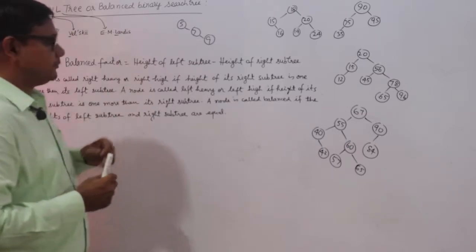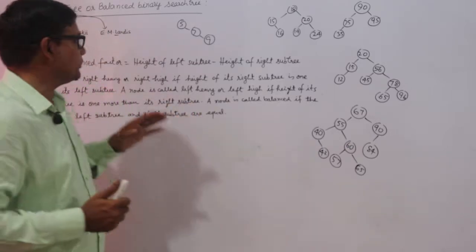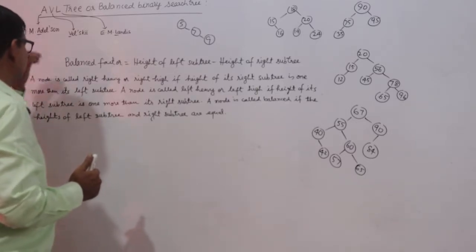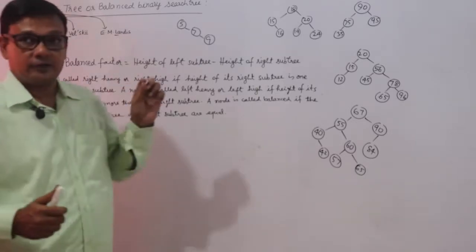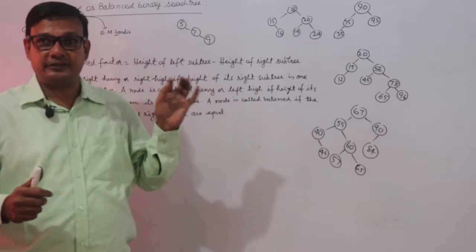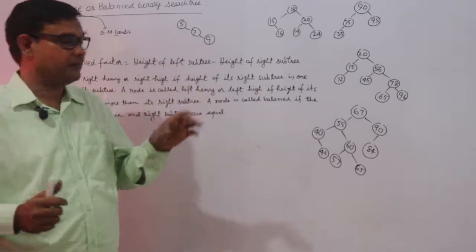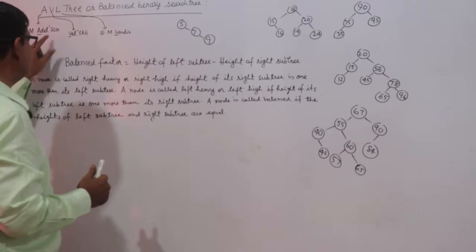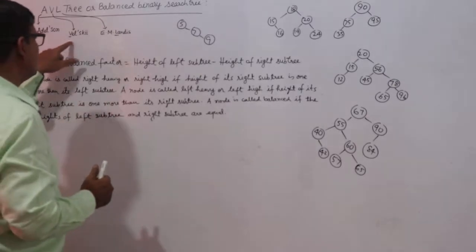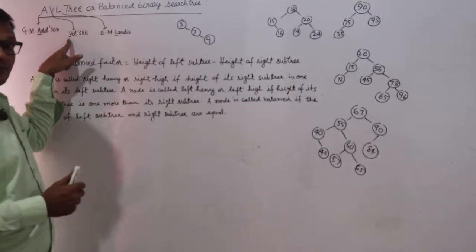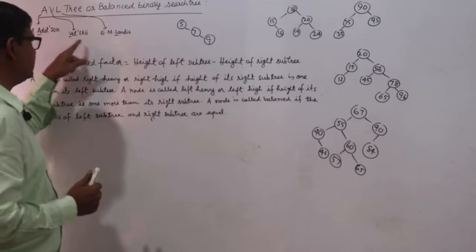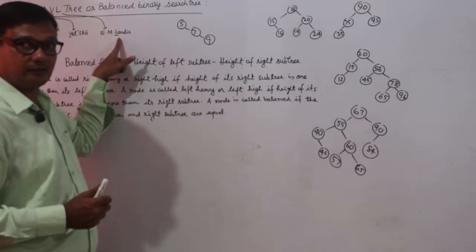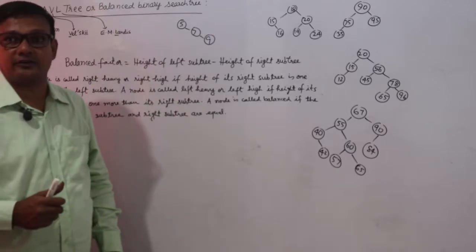This Balanced Binary Search Tree is also known as AVL tree. This is by the name of three mathematicians of Russia. Those mathematicians were G.M. Adelson — A from Adelson — Velsky — V from Velsky — E.M. Landis — L from Landis. So, this is AVL tree.